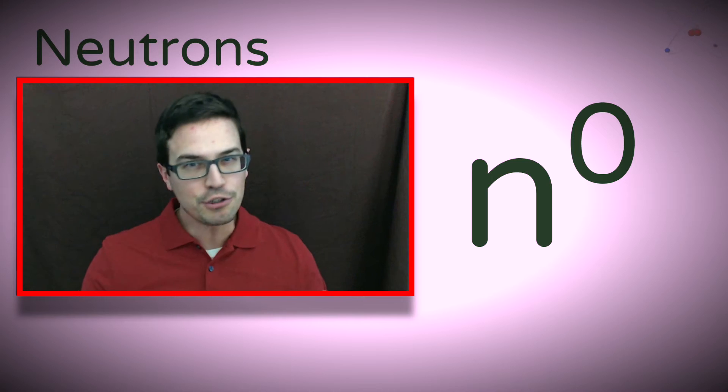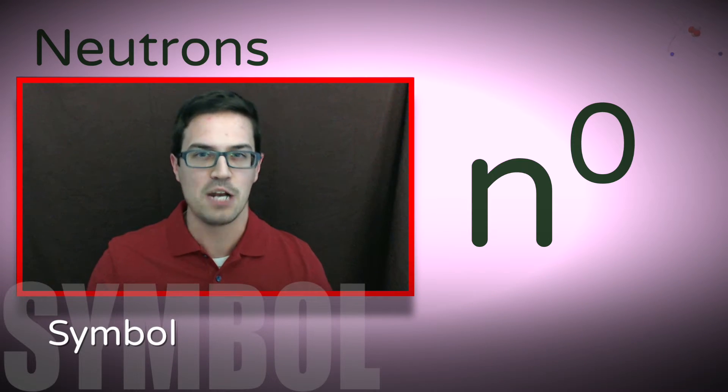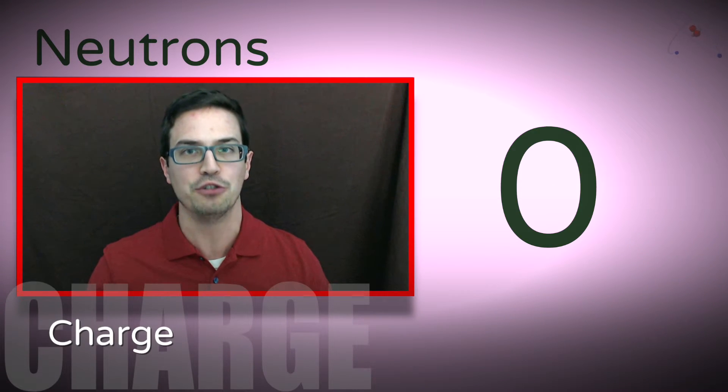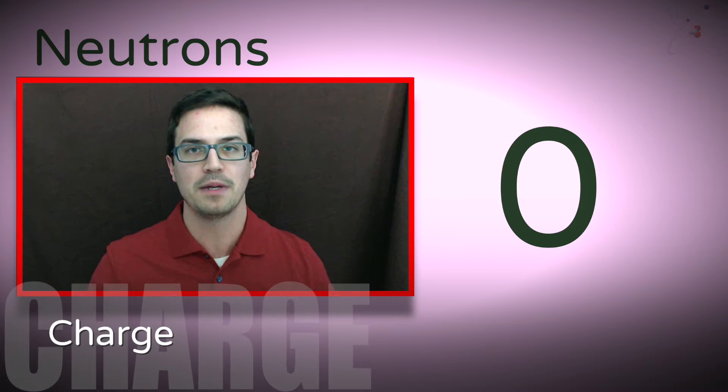On to neutrons. A neutron has a symbol of a lowercase n with a zero in the upper right corner. The zero represents the charge of the neutron, which is zero, or sometimes called neutral.